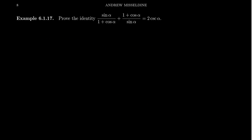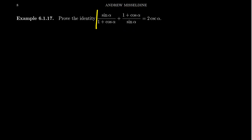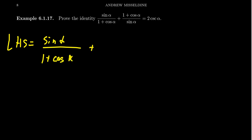Let's do another example. This one already has fractions, which is great. I'm going to choose the more complicated side: sine alpha over 1 plus cosine alpha, plus 1 plus cosine alpha over sine alpha. Alpha is just the Greek letter equivalent of A. We'll start with the left-hand side since we already have these fractions in play.